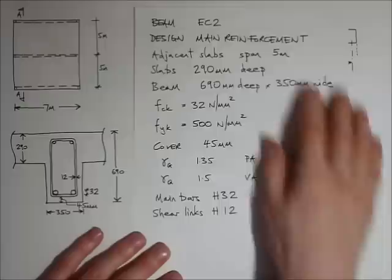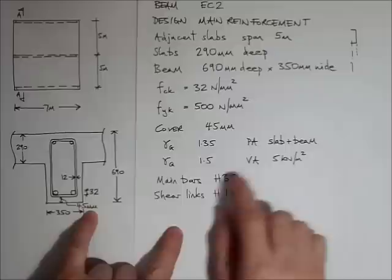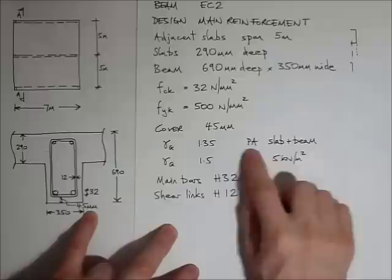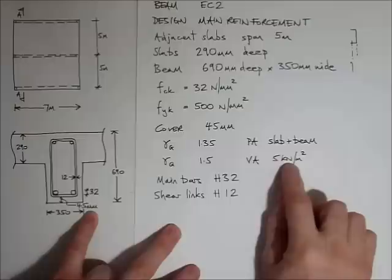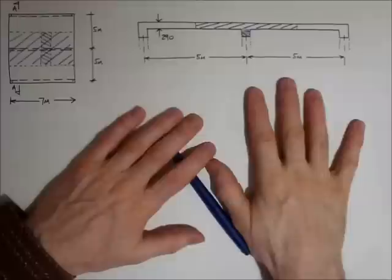What else have we got? We've got some concrete, which is 32N strength, some steel, which is 500N strength, cover generally which is 45mm. We've got some typical load factors for dead and live. Dead load just comprises the slab and the beam self-weight, the variable action or the live load I've taken as 5kN/m² throughout the slabs. The main bars are 32mm and the shear links are 12mm.